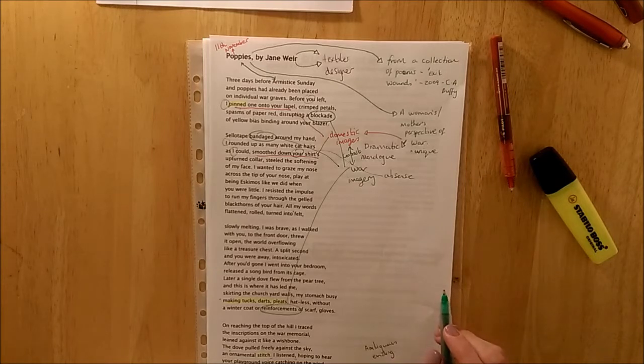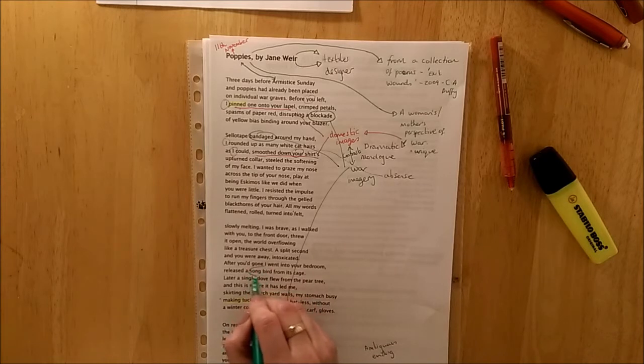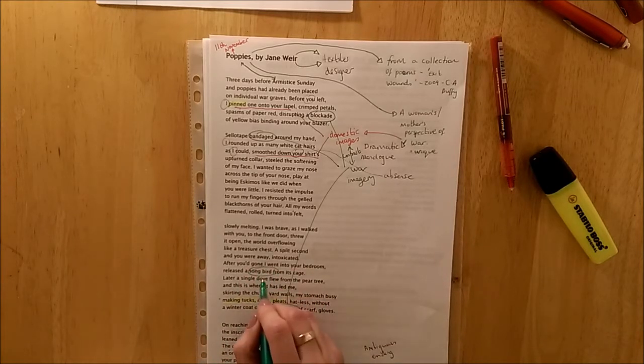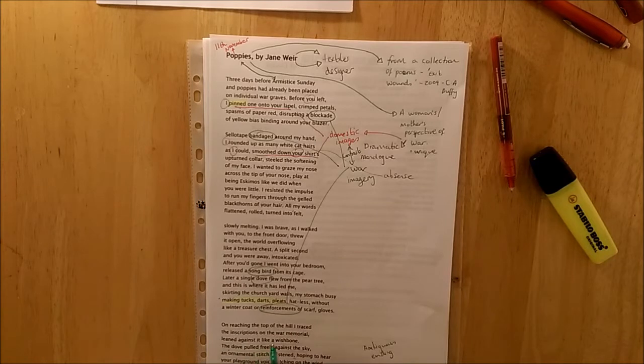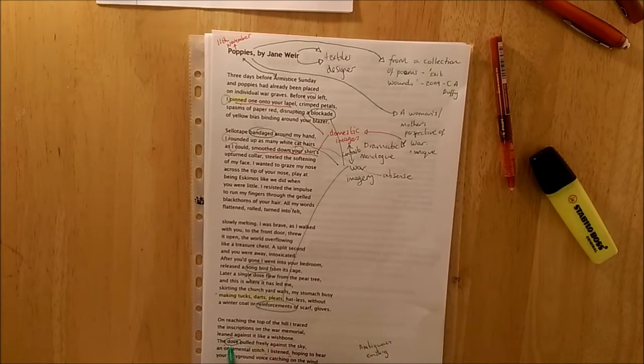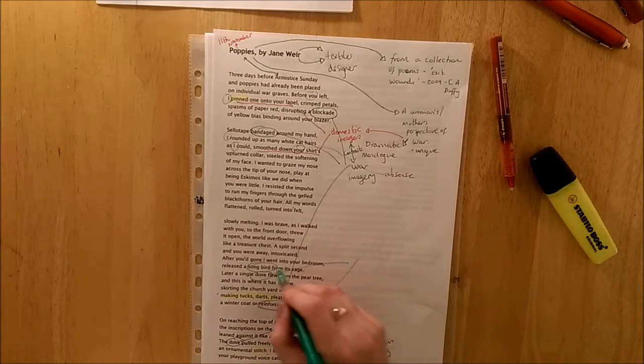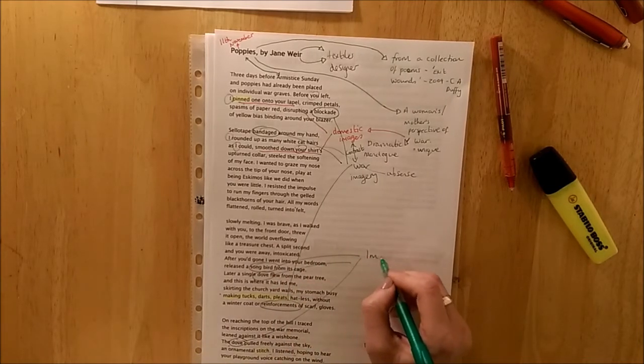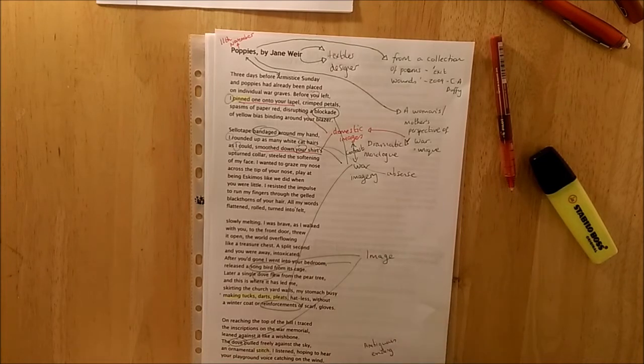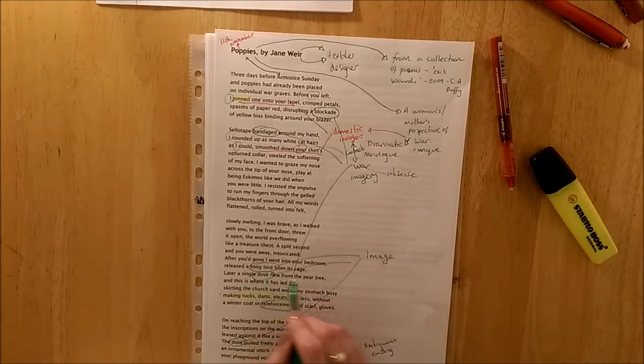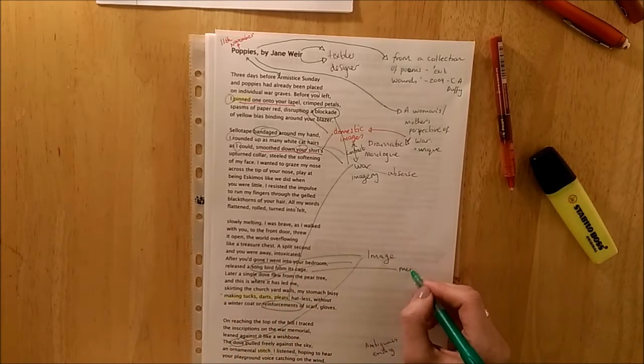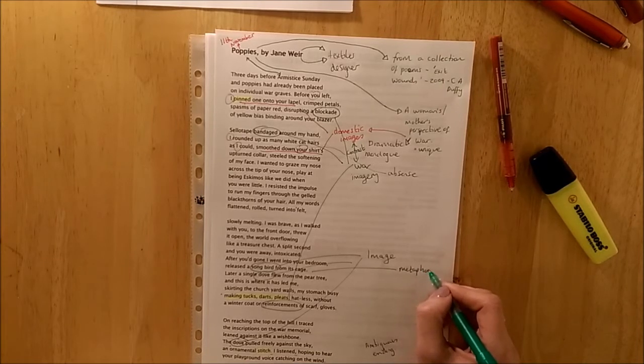Going through, there's also towards the end, this image of a bird released from its cage. And a dove, which again comes back here as well. The dove in the sky. We know about birds, connotations of freedom. So this is a strong image. This could also be a metaphor. Went into your bedroom, released a songbird from her cage. Maybe it's anger that she's actually releasing.